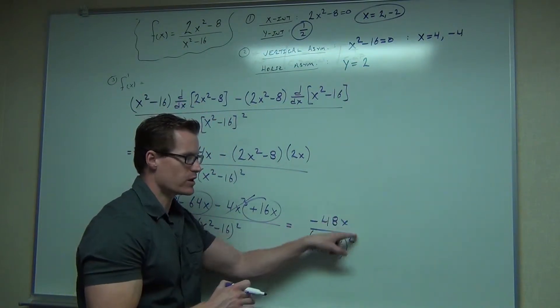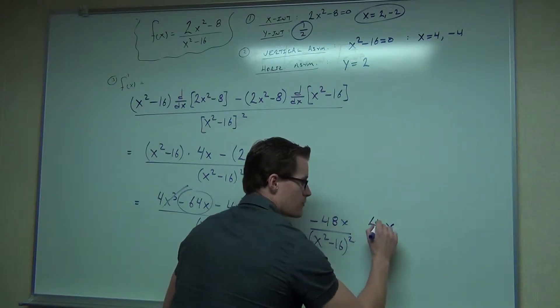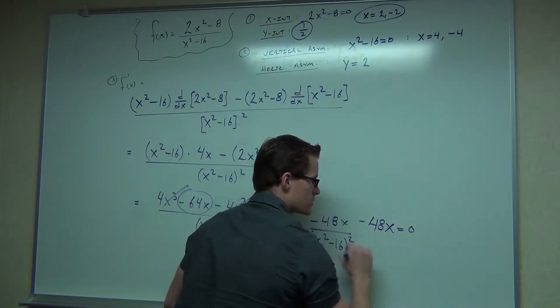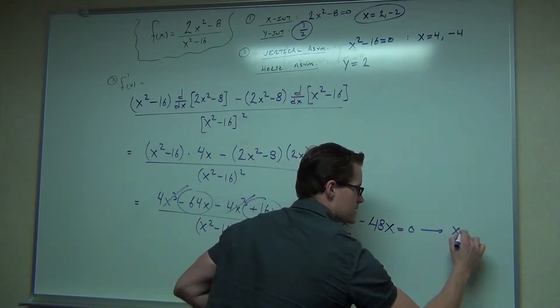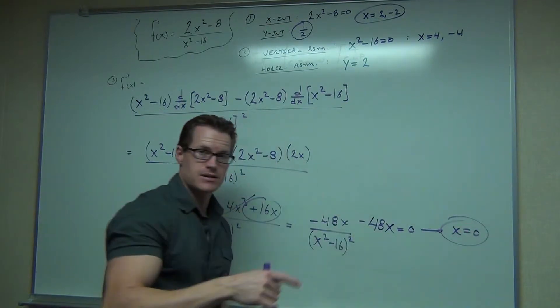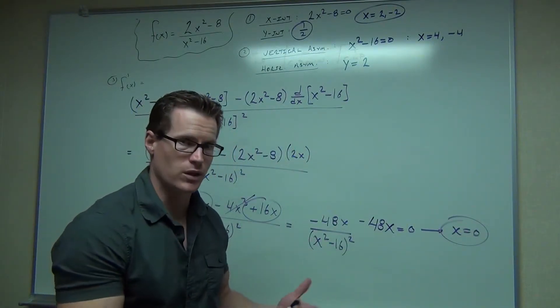So in our case, the numerator equals zero when negative 48x is equal to zero, that says x equals zero. That's going to be one critical number. That possibly is a relative max or relative min.